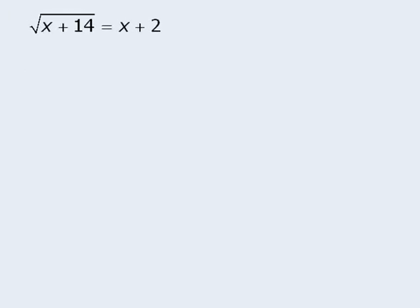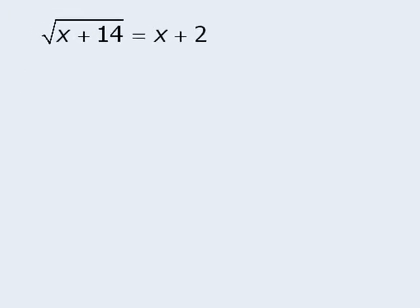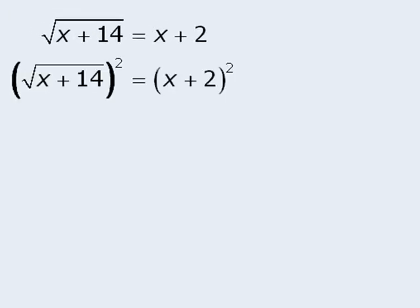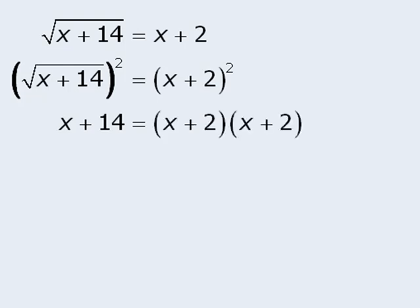Let's try another question. As usual, we will raise both sides to the power of 2. When we do this, we get x plus 14 on the left-hand side. On the right-hand side, we have x plus 2 squared, which is equal to x plus 2 times x plus 2. When we expand the right-hand side using the FOIL method, we get x squared plus 4x plus 4, and we now have an equation that we can solve for x.